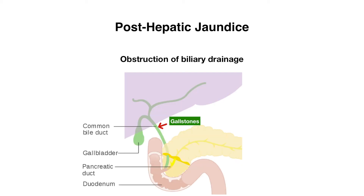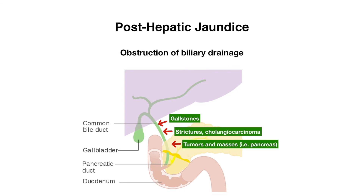Let's now talk about posthepatic jaundice, which is where you have an obstruction of biliary drainage. This can be due to intraluminal causes — something inside the lumen of the duct, like gallstones. There can also be intramural causes, when you have an issue involving the lining of the duct, like strictures or cholangiocarcinoma. Finally, you can have extramural causes, where something outside of the duct still affects the duct itself — we can see this with tumors, particularly pancreatic head tumors, as well as other masses like lymphoma.